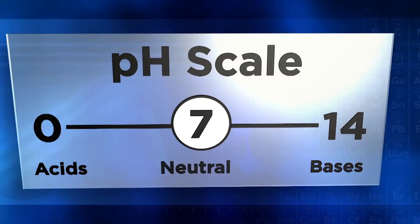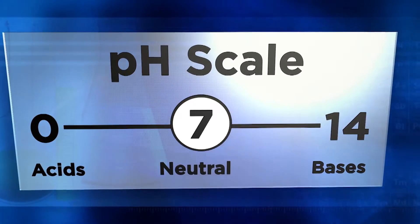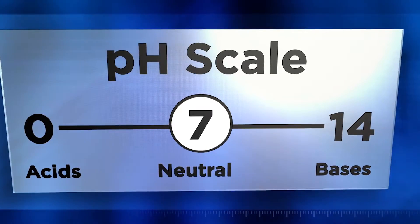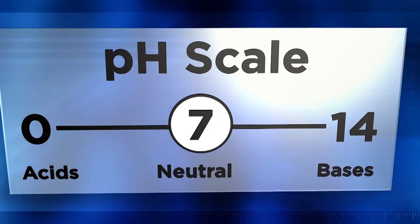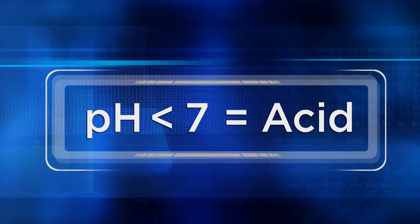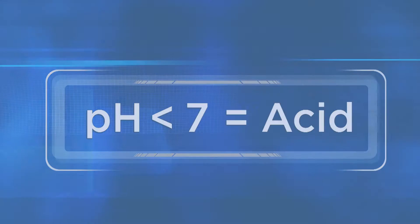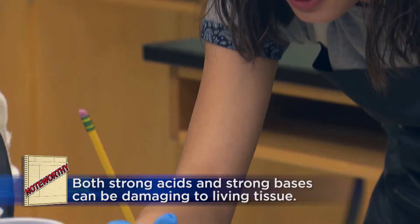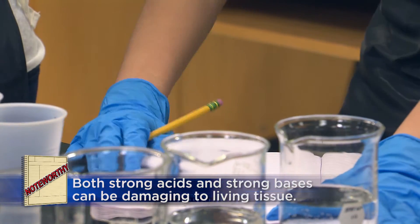The midpoint on the pH scale, 7, is the number that represents equal amounts of acid and base in a solution. A pH of 7 is usually referred to as neutral. If the pH value is lower than 7, we call that an acid — the closer to 0 the pH number is, the stronger the acid. If the pH value is greater than 7, we call that a base — the closer to 14 the pH number is, the stronger the base, or alkali. Both strong acids and strong bases can be damaging to living tissue.